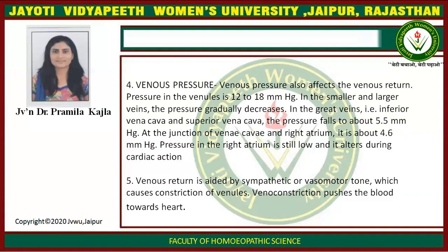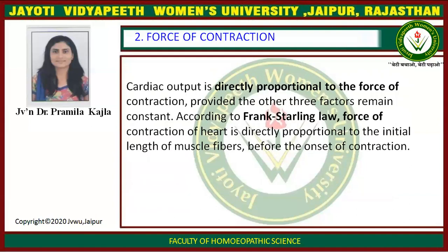Venous return is also aided by sympathetic vasomotor tone, which causes constriction of veins. Venoconstriction pushes the blood towards the heart. The second factor maintaining cardiac output is force of contraction. Cardiac output is directly proportional to the force of contraction, provided the other three factors remain constant. According to Frank-Starling law, force of contraction of the heart is directly proportional to the initial length of the muscle fiber before the onset of contraction.